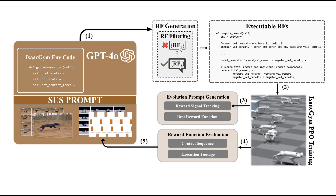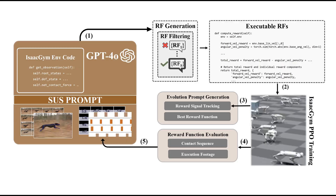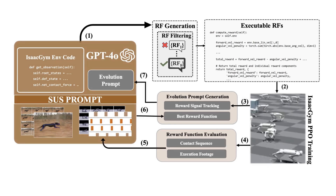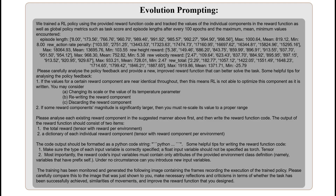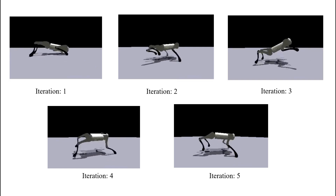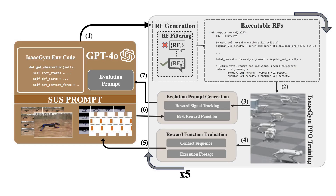Every 100 iterations, the Go1's training behavior is recorded with pose estimation overlaid and arranged into a grid, and together with the contact sequences are passed into the VLM, which uses this information to select the best EREF. The tracked reward signals of the selected EREF are then passed back to GPT-4o, which is prompted to evolve the EREFs to better imitate the skill. This concludes one SDS iteration, with five iterations needed in total to achieve high fidelity imitation of the skills.